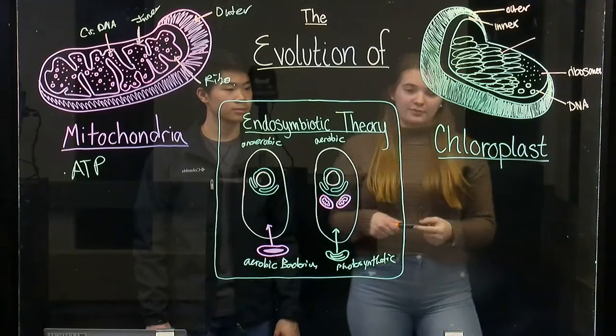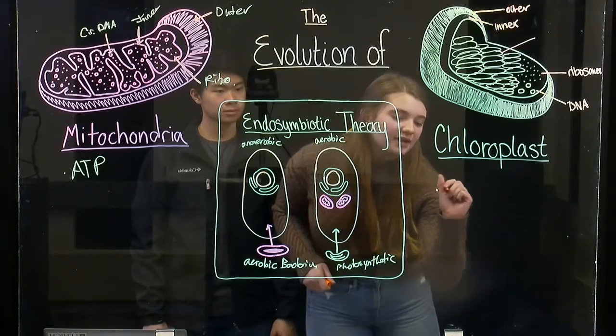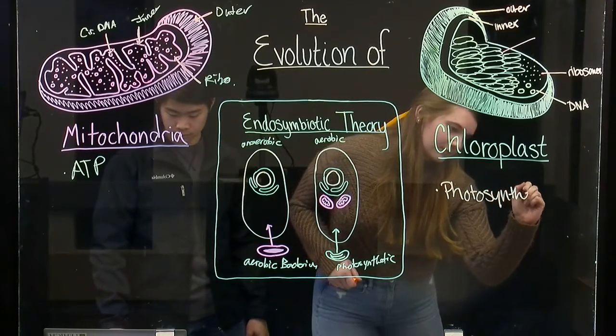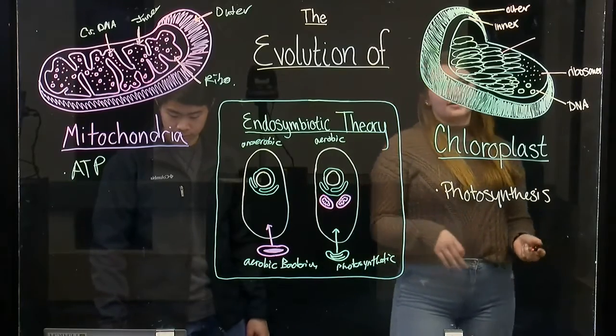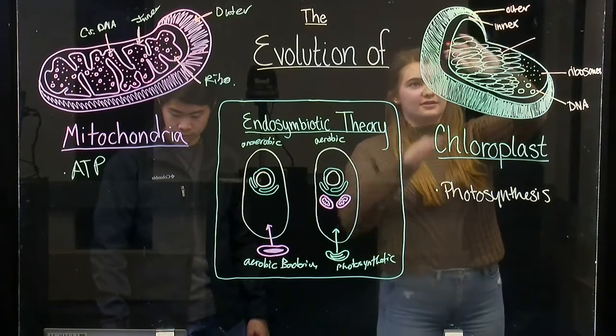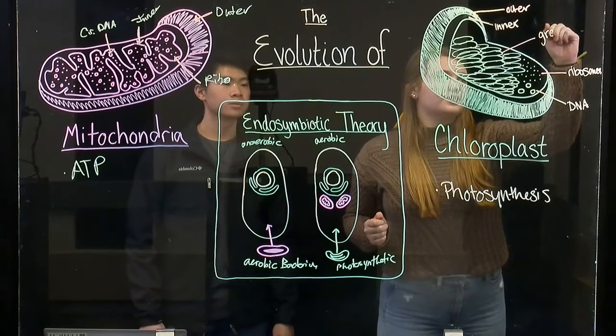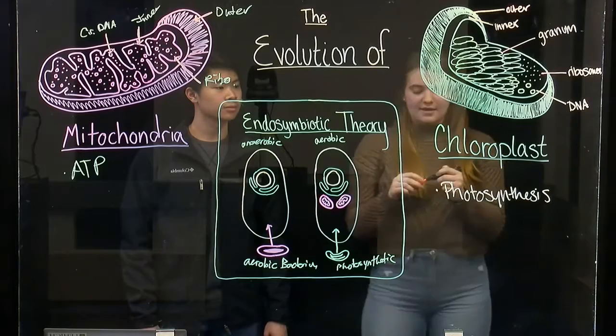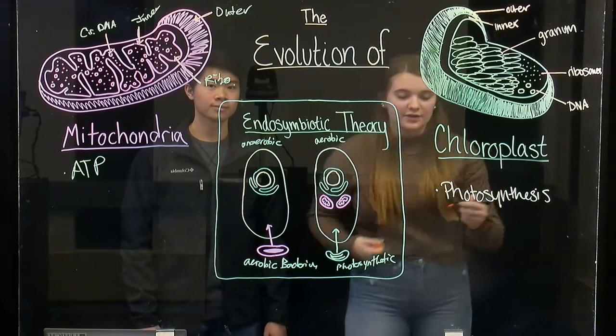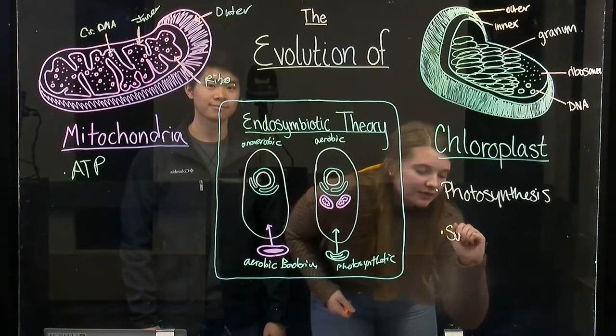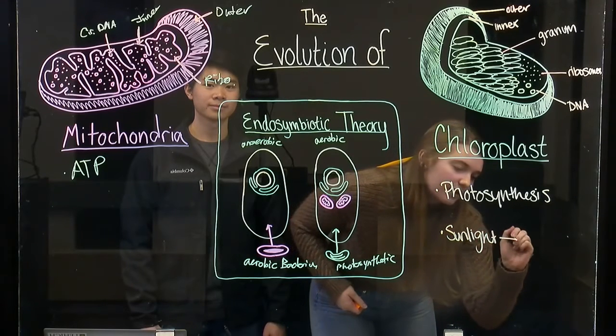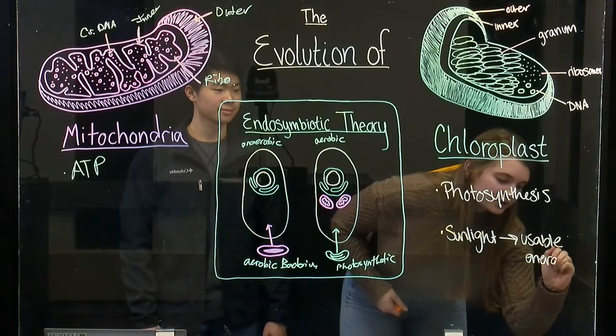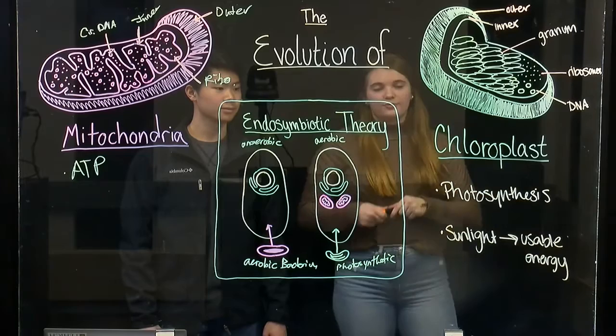The function of the chloroplast inside its host cell is that it's the site of photosynthesis. This biological process takes place here in these circular stacks of granum, which make up one tall thylakoid. During photosynthesis, the chloroplast converts sunlight into usable energy, just like the mitochondria, to fuel further cellular processes.